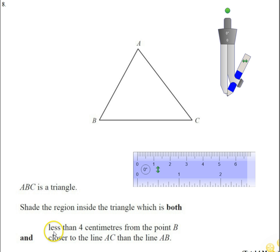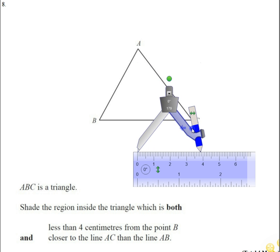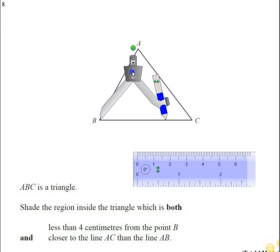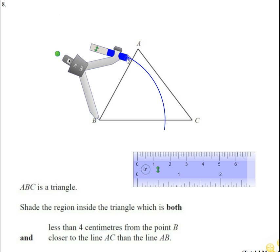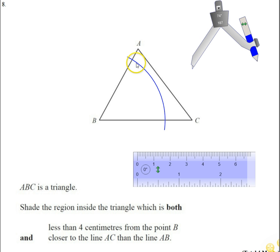Okay, so we're going to concentrate on the first bit, less than four centimeters from the point B. So I need to mark all the points that are four centimeters from the point B, and that's going to be part of a circle or an arc. So I'm going to open up my compasses four centimeters. You need to be as accurate as you can be with this, so put that there and we're going to mark an arc that goes around like this. All of these points are four centimeters away from B, and all of the points on this side of it are going to be less than four centimeters from the point B.